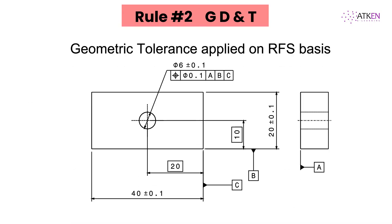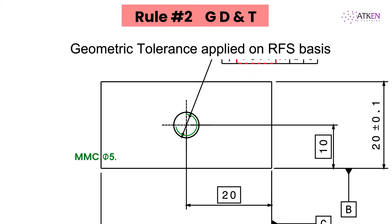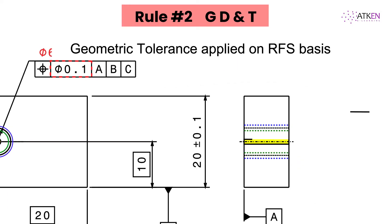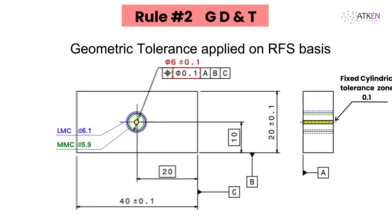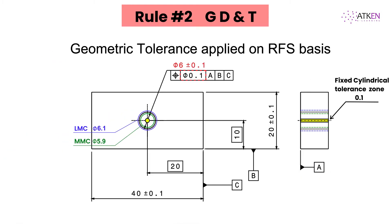Let's look at this example: we have a feature of size with diameter 6 ±0.1 and a positional tolerance of diameter 0.1 applied to it. This means the hole diameter can vary between diameter 5.9 and 6.1, and the positional tolerance controls the location and orientation of the axis within a cylindrical tolerance zone of diameter 0.1. Since no modifier is applied on positional tolerance and datums, RFS applies.